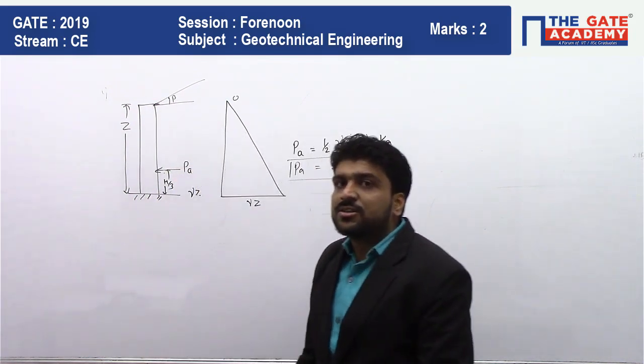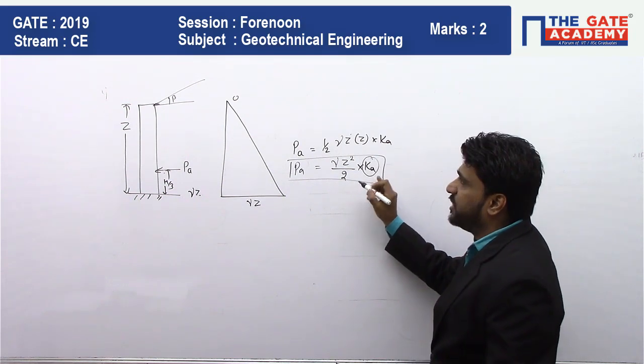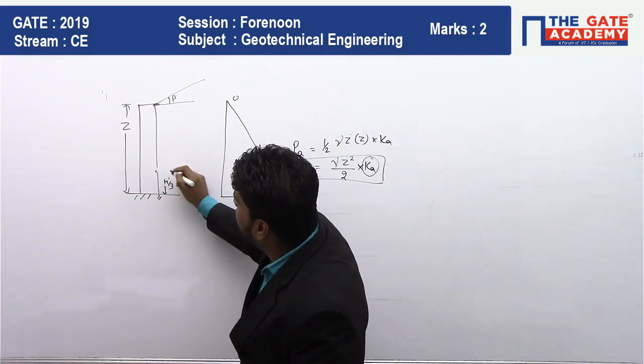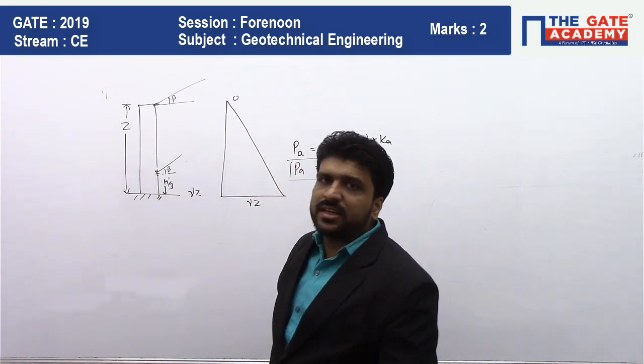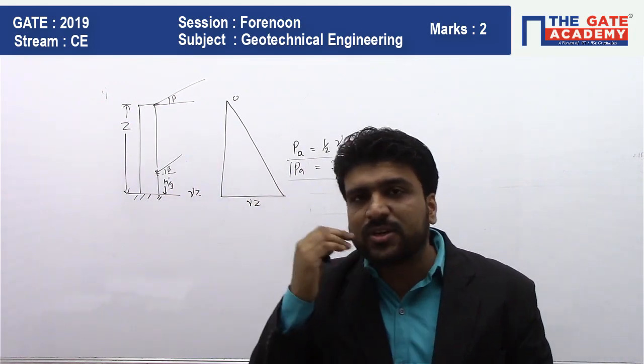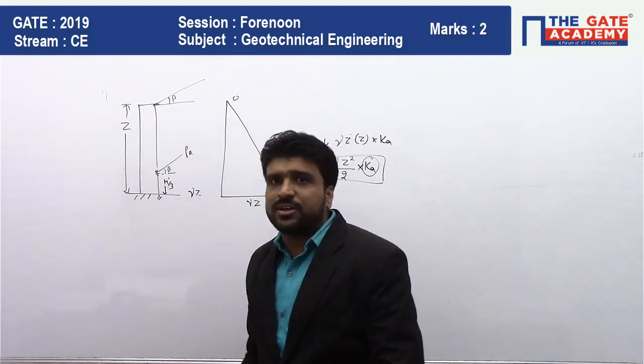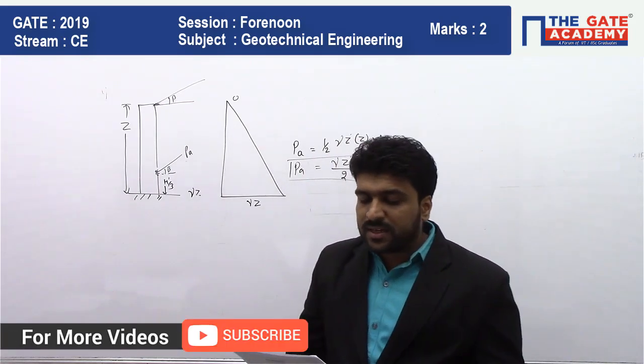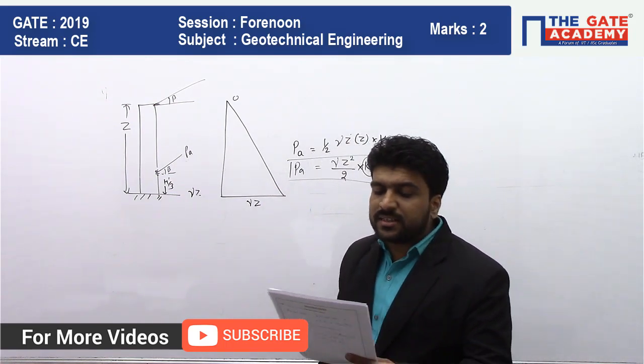Now if your surcharge becomes at beta angle, this Pa will remain similar, but this Ka value will be changed because of this inclined surcharge. Now this Pa will work at angle of beta. Because initially the surcharge was at zero angle, so it was also at zero angle. Now the surcharge is at beta angle, so it will also be at beta angle.